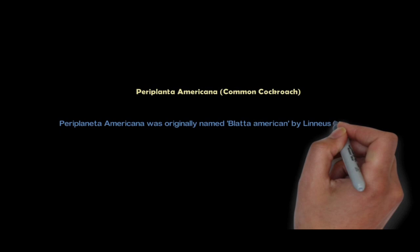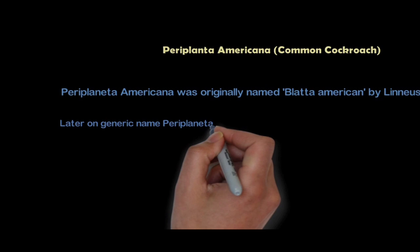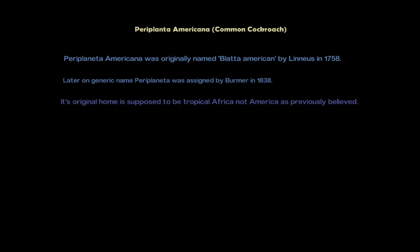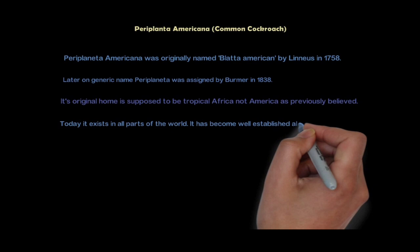Periplaneta Americana was originally named Blatta Americana by Linnaeus in 1758. Later on, the generic name Periplaneta was assigned by Burmester in 1838. Its original home is supposed to be tropical Africa, not America as previously believed. Today it exists in all parts of the world and has become well-established almost throughout India.